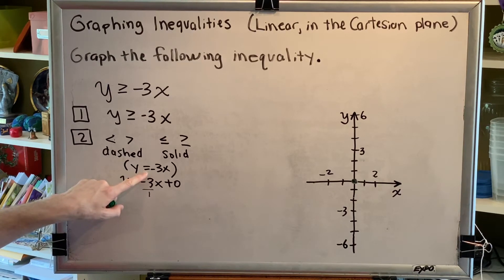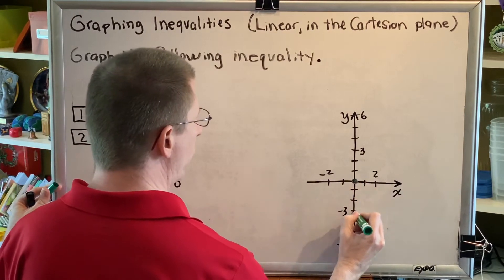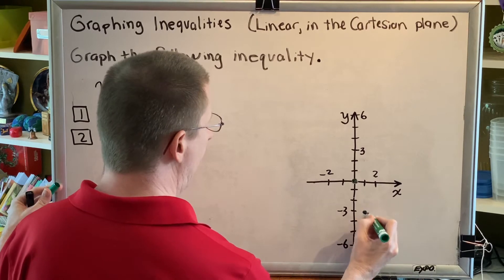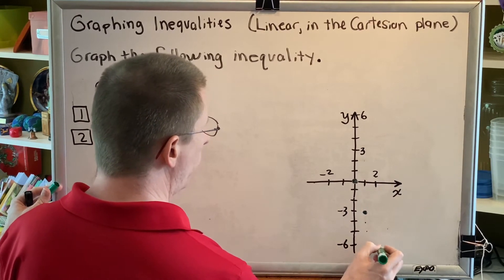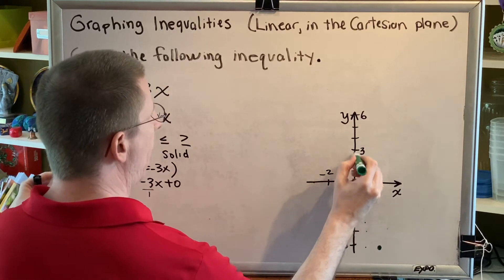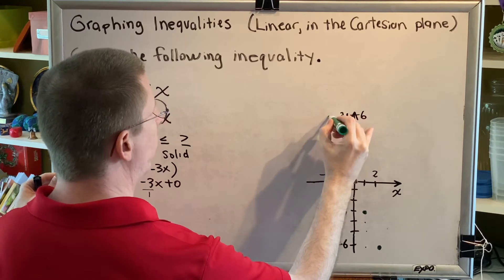In other words, 3 down, 1 to the right. So from the intercept, go 3 down and 1 to the right. And again, 3 down and 1 to the right. When you run out of room, go back to the intercept and do the opposite. 3 up and 1 to the left. 3 up and 1 to the left.